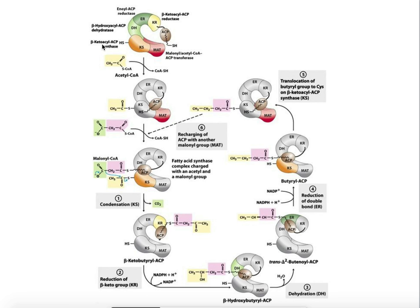First, beta-ketoacyl-ACP synthase, or KS, has to receive that acetyl group — we attach the acetyl part to the thiol of KS. Second, we have to attach the malonyl group from malonyl-CoA onto the acyl carrier protein. The malonyl group — the carboxyl group and the two carbons — gets attached to the sulfur or thiol of the acyl carrier protein. Once those two things happen, then we're going to actually go through the process of fatty acid synthesis.